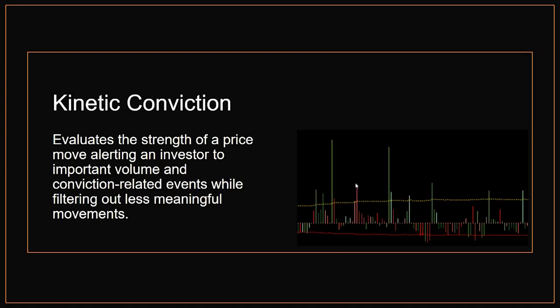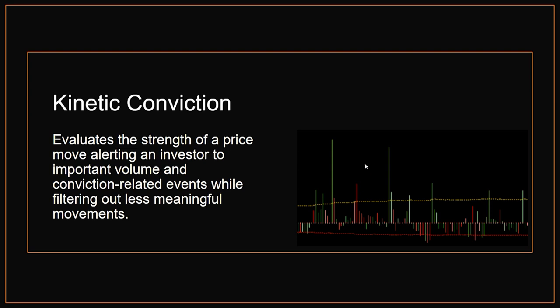The second indicator is Kinetic Conviction, which is designed to evaluate the strength of a price move and alert you to important volume-related, conviction-related events while filtering out the less meaningful, less important moments. And finally, the third one is the Relative Conviction Momentum, which uses a graded color scale on volume and is designed to help you understand the intensity of the movement.